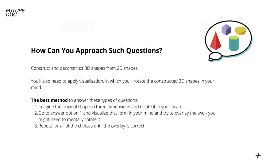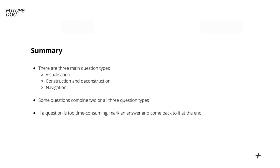For visualization: imagine the shapes, rotate them in your head, get used to that kind of in-mind engineering. Then construct and deconstruct the shapes, applying visualization as the best method. Imagine the original shape in three dimensions, rotate it, then go to the first option, work out whether it works or not, and then go through the rest applying the same rotation and visualization to see if it fits. Just to summarize, there are three question types. Some questions combine different skills. Finally, be smart with your time management - don't get caught up on a question; just flag it, move on, have a guess since there's no negative marking, and come back if you have time.